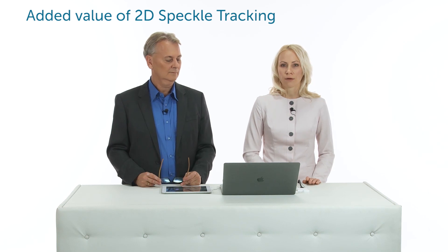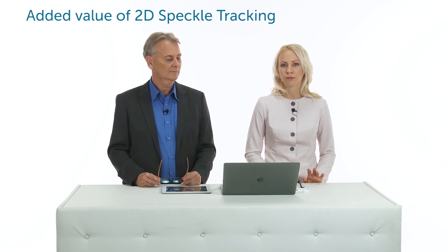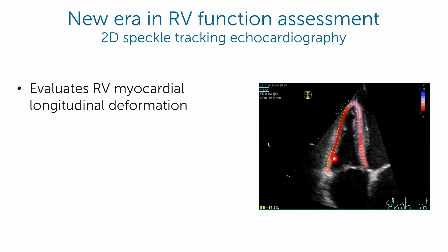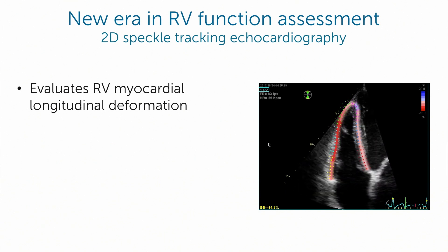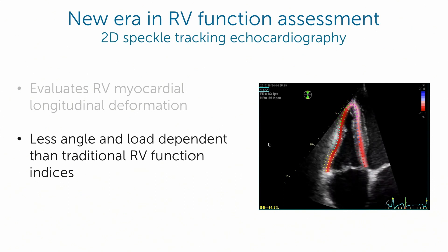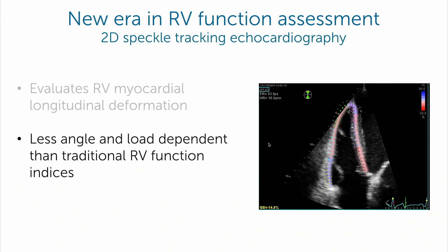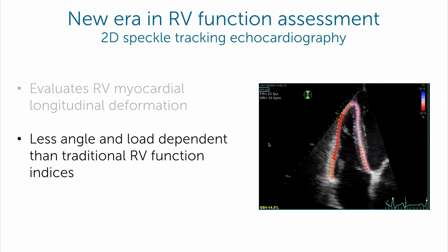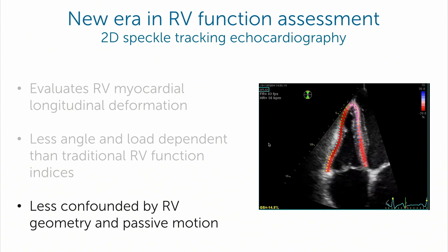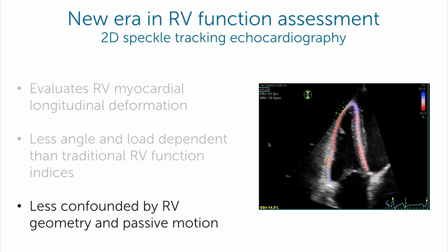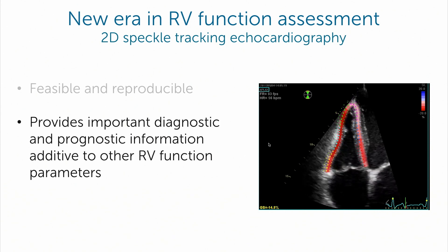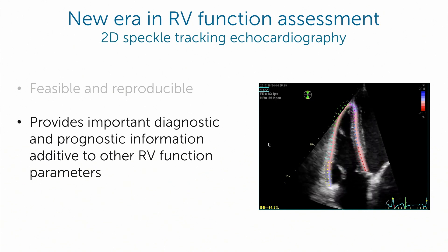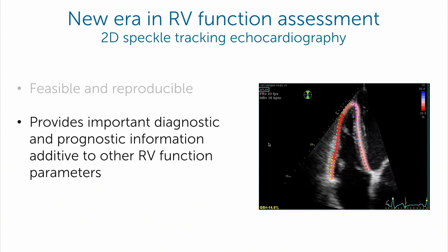RV strain uses a completely different methodology and approach. It evaluates RV myocardial longitudinal deformation by tracking speckles within the myocardium and provides information about myocardial deformation. This technique is less angle- and load-dependent than traditional RV function indexes and even than 3D ejection fraction. It is less confounded by RV geometry and passive motion of heart segments, and is very feasible, reproducible, and provides important diagnostic and prognostic information additive to other RV function parameters.